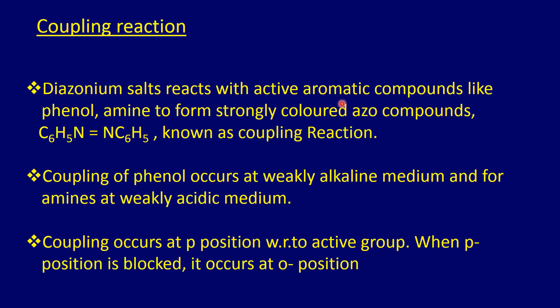Now coming to the coupling reaction. The diazonium salt reacts with active aromatic compounds like amines (aniline) and phenol. Active aromatic compounds are aromatic compounds whose benzene ring contains an active group — such as an amino group or a phenolic OH group — that can activate the benzene ring towards electrophilic substitution. The diazonium salt on reaction with active aromatic compounds forms a strongly colored azo compound with the formula C6H5–N=N–C6H5. This reaction is known as the coupling reaction and is used in the dye industry to prepare red-colored dye.